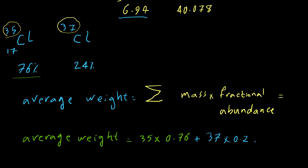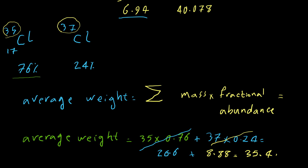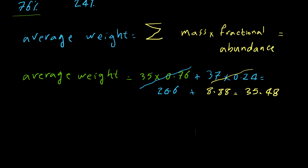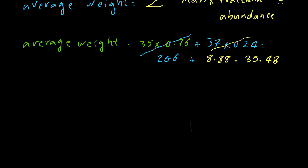The contribution from chlorine-35 is 35 × 0.76 = 26.6, and from chlorine-37 is 37 × 0.24 = 8.88. The total average weight for chlorine is 35.48.